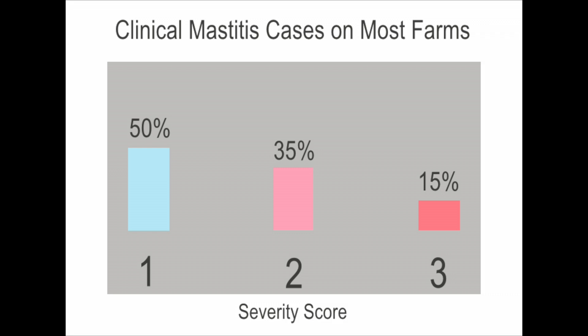On most farms where we've collected this data, we know the normal distribution of these cases. Approximately 50% of clinical cases on most farms are severity score one, approximately 35% are severity score two, and only about 15% are severity score three — really sick cows. So when we see differences in these distributions, it's a signal for us that we need to look at the detection systems for clinical mastitis on our farms.